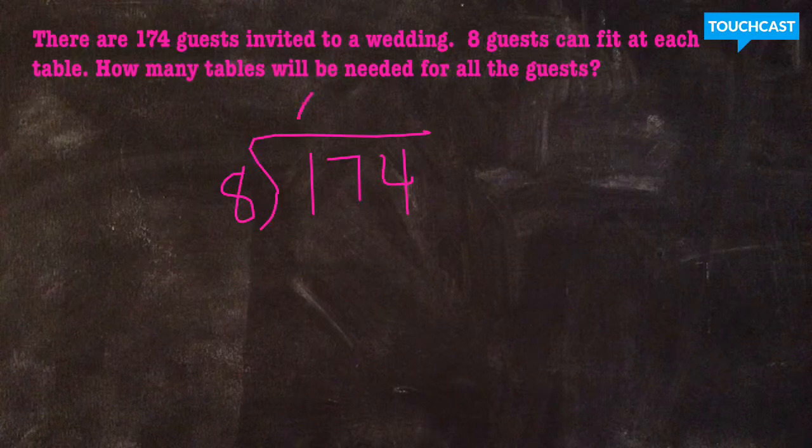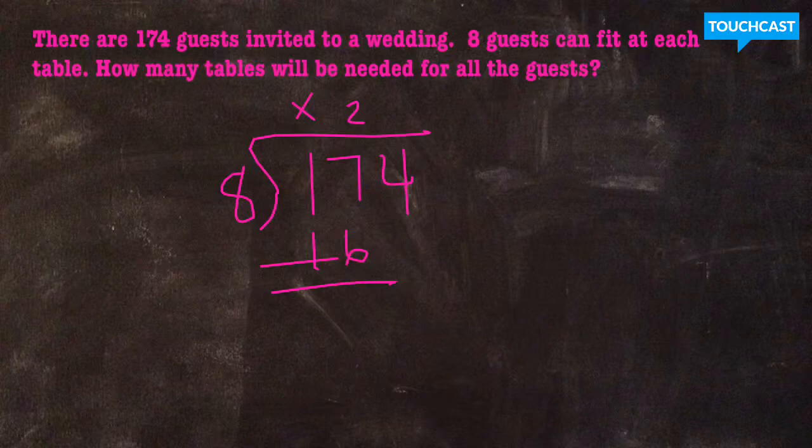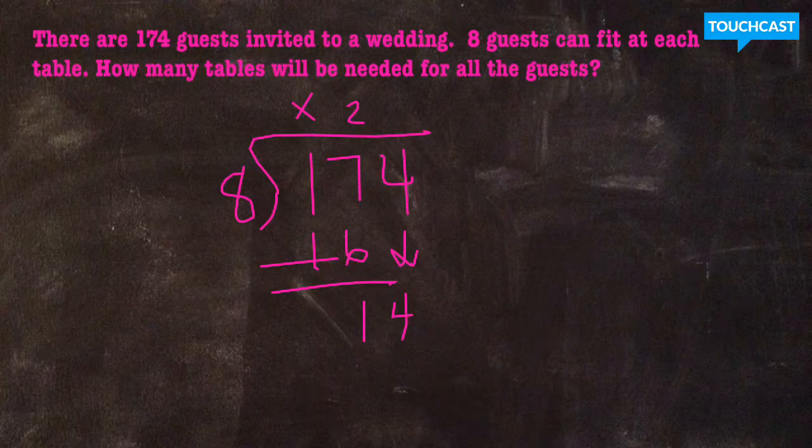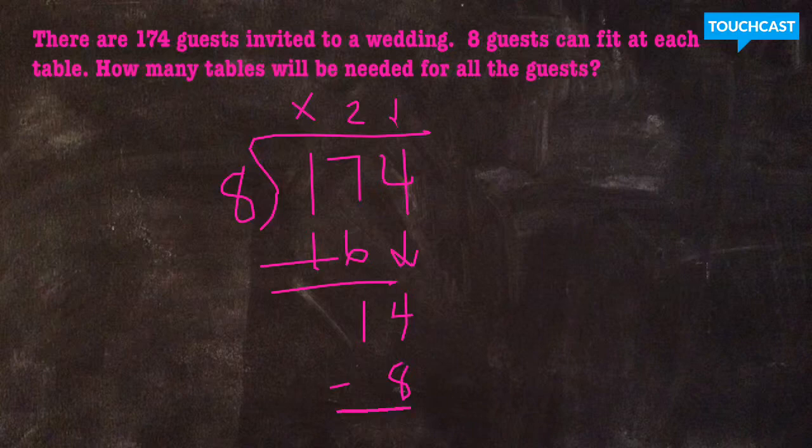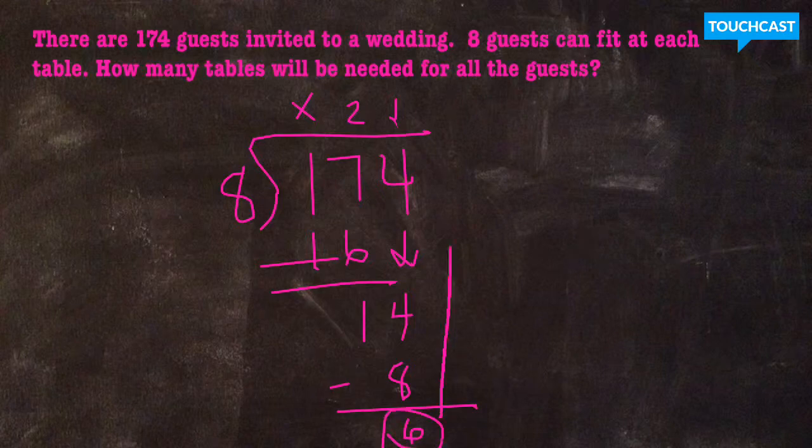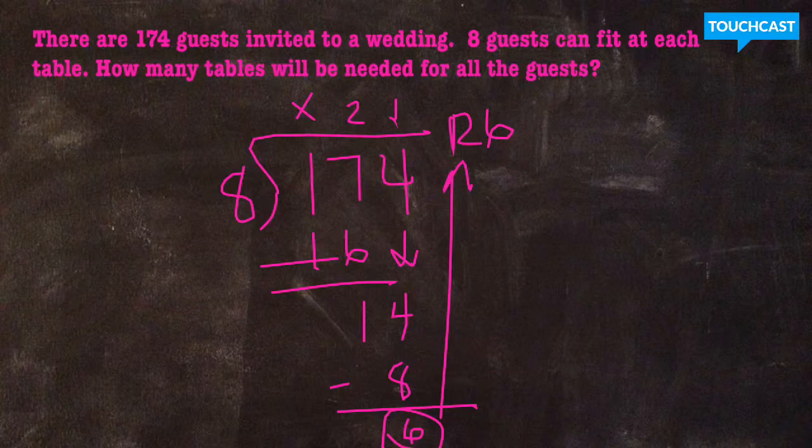So eight does not go into one because eight is larger than one. But eight goes into 17 two times. Two times eight is 16. 17 minus 16 is one. Bring down my four. How many times does eight go into 14 without going over? Well, it only actually goes in one time. One times eight is eight. 14 minus eight is six. Nothing left to bring down. So this tells me that my remainder is six.